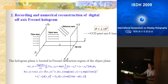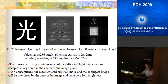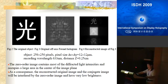This shows the conventional recording geometry. Because of the low spatial resolution of the CCD, the angle between the object wave and the reference wave must be limited to several degrees. Figure 2 shows the original object, which is a Chinese character meaning 'light.' Figure 3 is the original Fourier hologram, and Figure 4 is the reconstructed image. From Figure 4, we can see that the zero-order image contains most of the diffracted light intensity and occupies a large area in the center of the imaging plane. As a consequence, the reconstructed original image and conjugate image are interfered with by the zero-order image and have very low brightness.